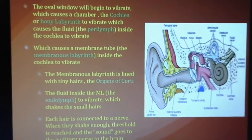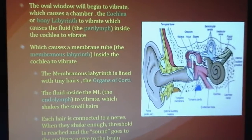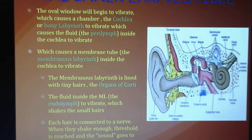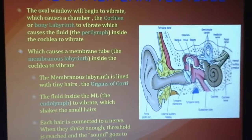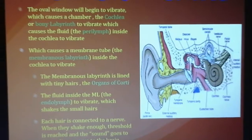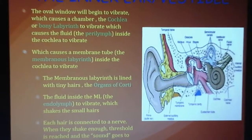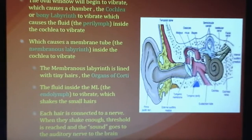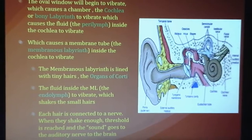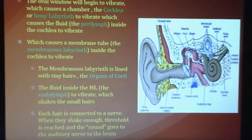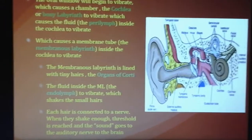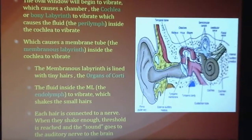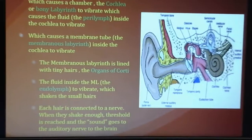The membranous labyrinth also has a fluid called endolymph inside it. If you could cut into the membranous labyrinth, it is fuzzy — it has hairs on the inside called the organs of Corti. Every hair in your body is connected to a nerve. So when the bony labyrinth vibrates, the perilymph vibrates, which vibrates the membranous labyrinth, which vibrates the endolymph, causing the organs of Corti to vibrate. When they vibrate enough to reach threshold, they create an electrical signal — and sound goes to your brain.